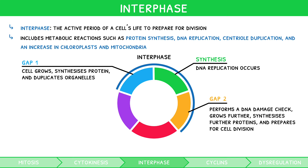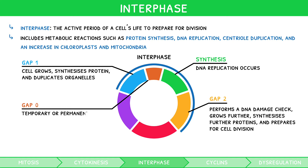Whilst uncommon, there is also an additional state called GAP0. This can occur after GAP1, and is a temporary or permanent state where a cell does not divide — like it's sleeping.